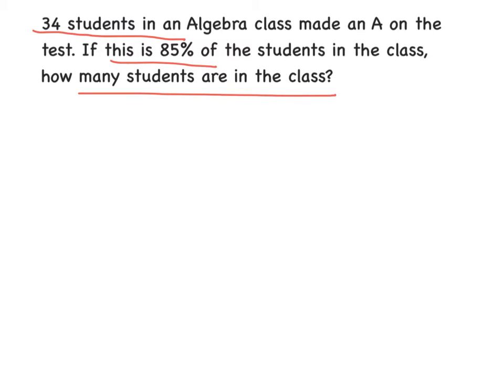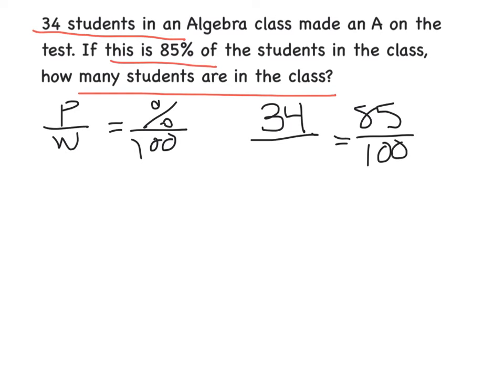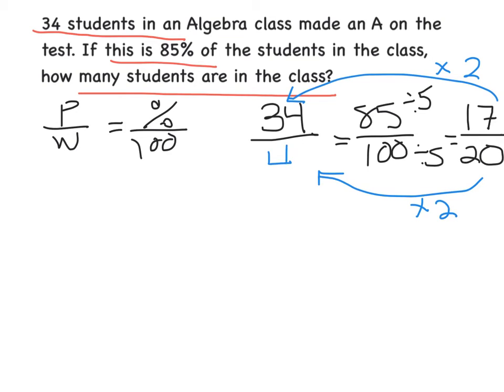You could set this up as part over whole equals percent out of 100. My part is 34, I don't know my whole, equals 85% out of 100. Right now I can't easily see how to get from 85 to 34, but I do know I could simplify 85 and 100. If I divide this by 5 and this by 5, 85 divided by 5 gives me 17, 100 divided by 5 gives me 20. Now you could see how to get from 17 to 34 times 2, so I would need to do the same thing to the 20 times 2, which would leave me with 40. So there are 40 students in the entire class. Sometimes you need to scale down before you scale up.